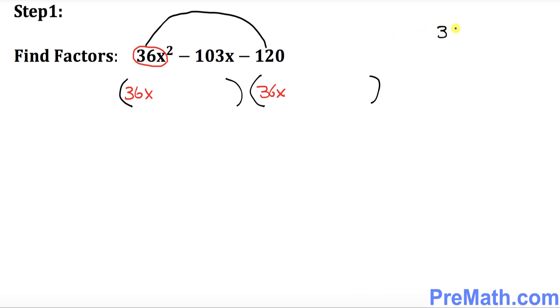So 36 times what? 100 and what? 20. So far so good. So now what we're going to do is I don't want you to be multiplying 36 times 120. It's going to give you a big number and that's going to be very tedious kind of process.